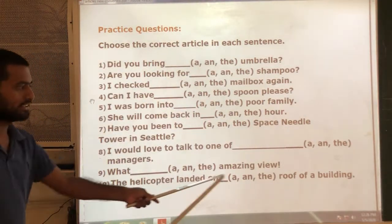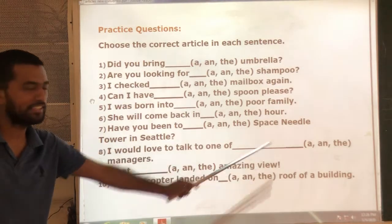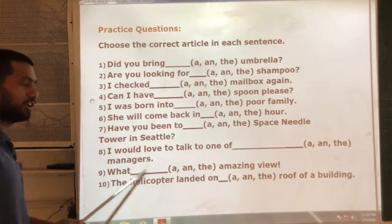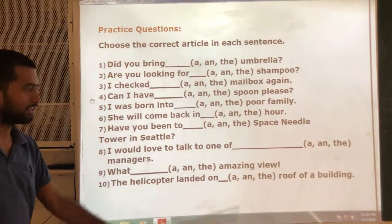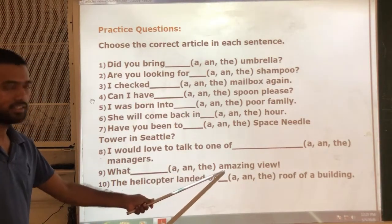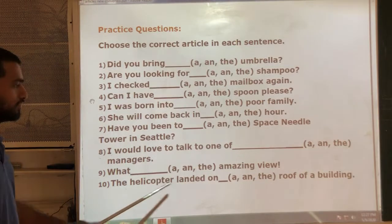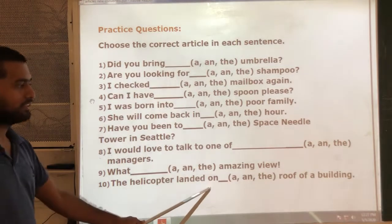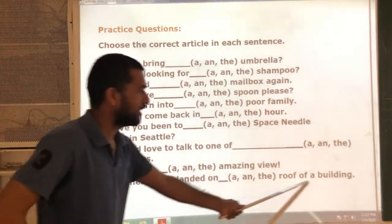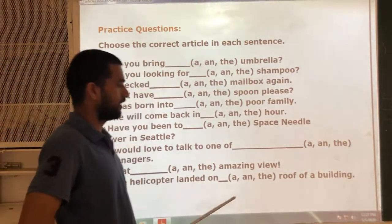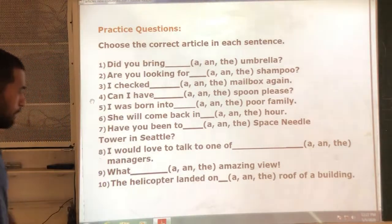Next: 'What ___ amazing view!' — What an amazing view, because 'a' is a vowel sound. Finally: 'The helicopter landed on ___ roof of a building' — on the roof of a building.